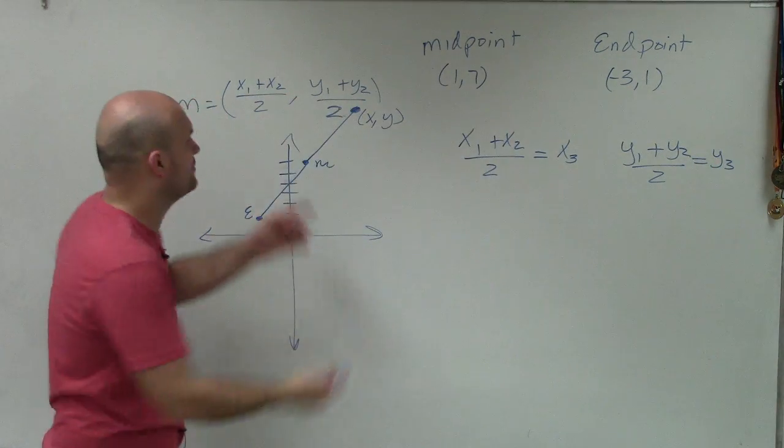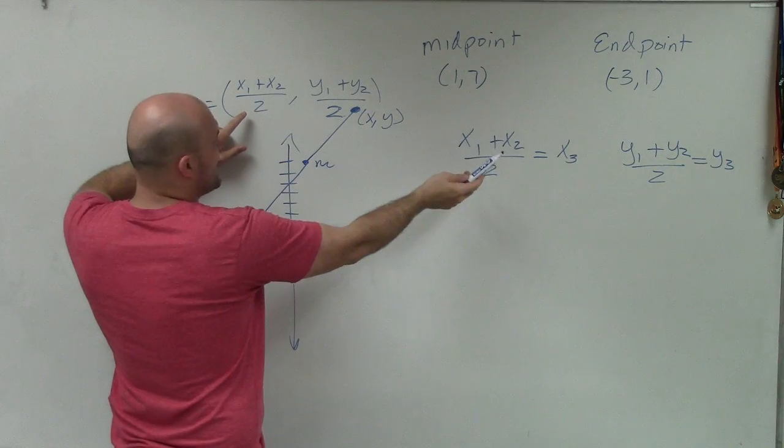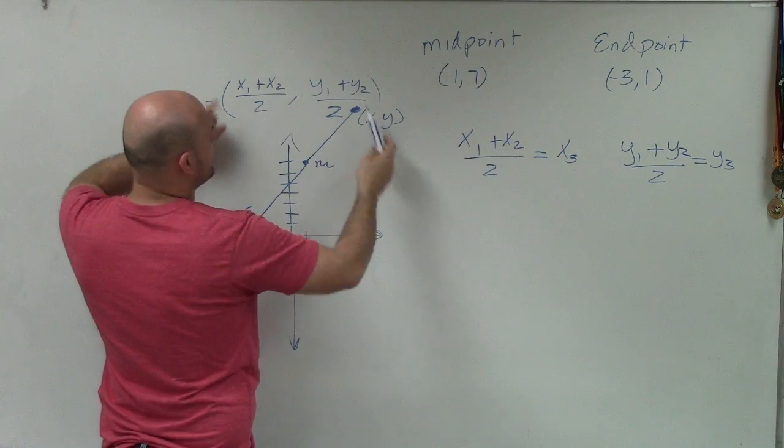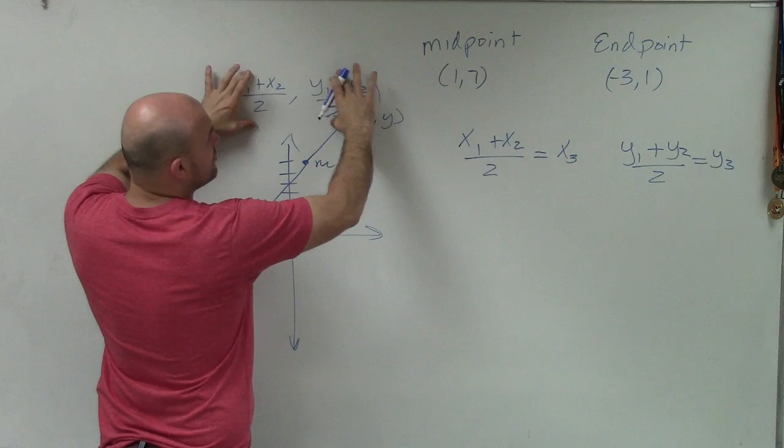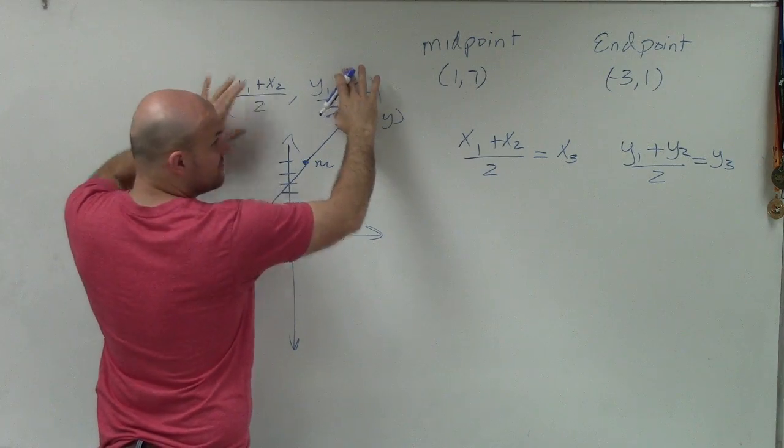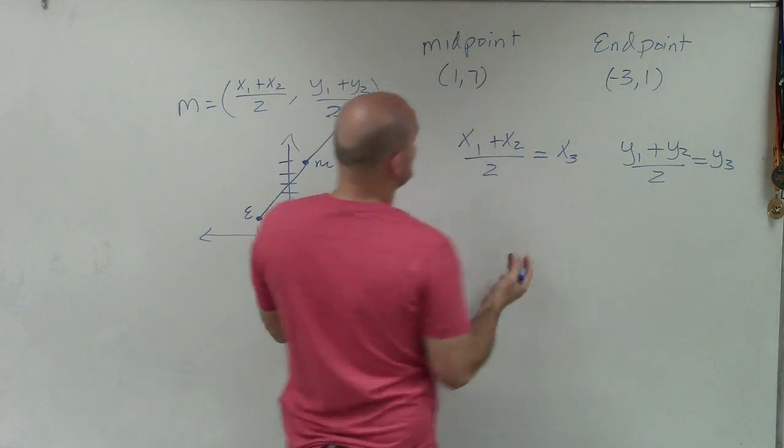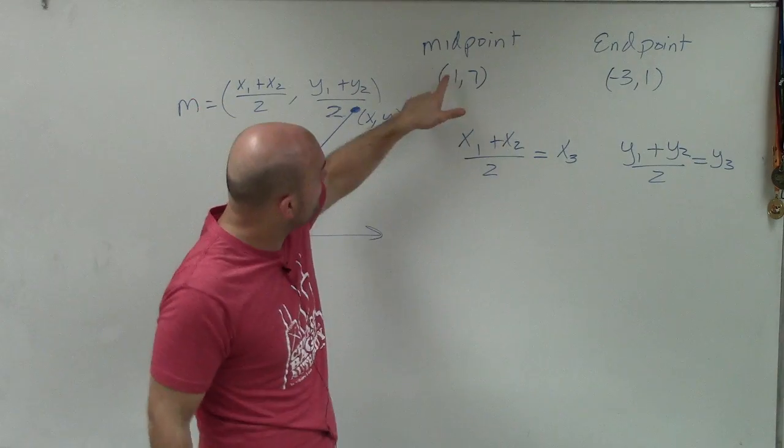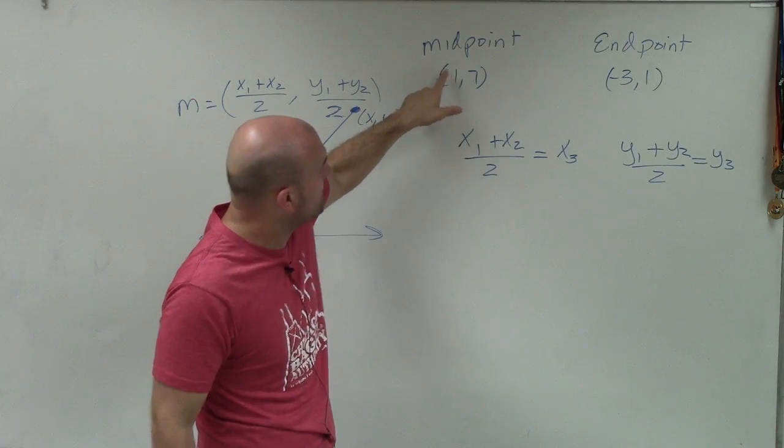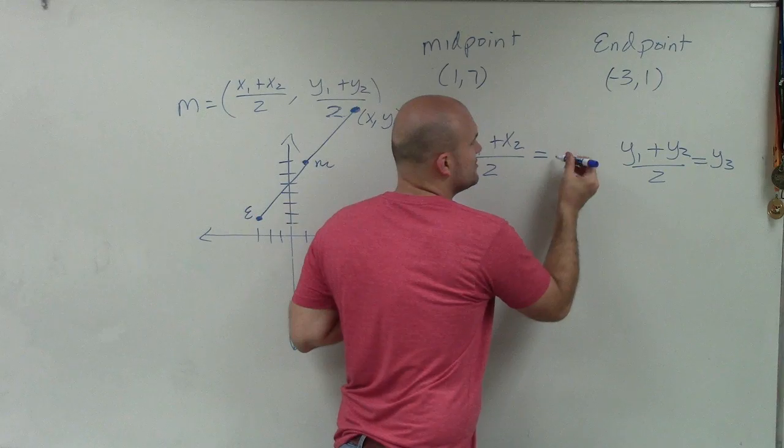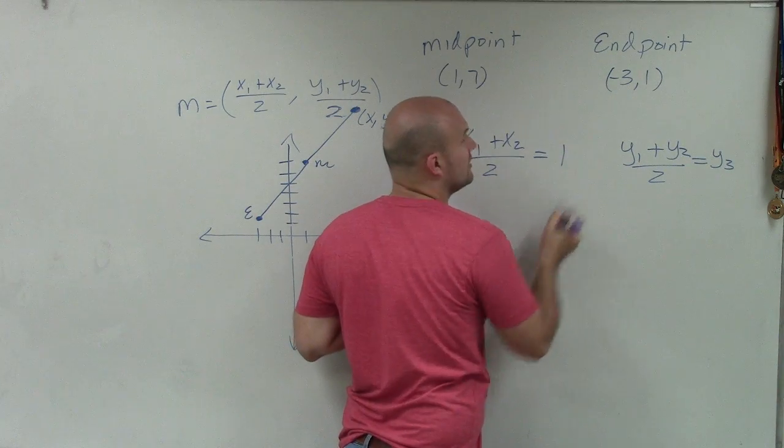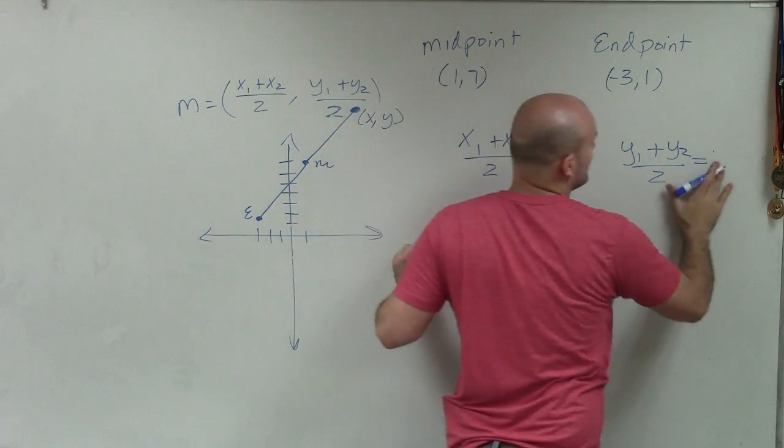Right? Now, what was the midpoint x and y? x3 and y3 is what happened when we got these values, which are the values of the midpoint. So do we know the values of the midpoint? Yes. We know that x value of the midpoint is 1. So instead of using x3, I'm going to say the midpoint was 1. The y-coordinate of the midpoint was 7.